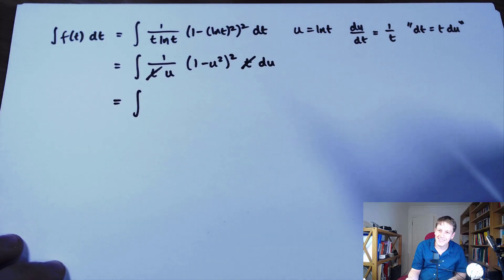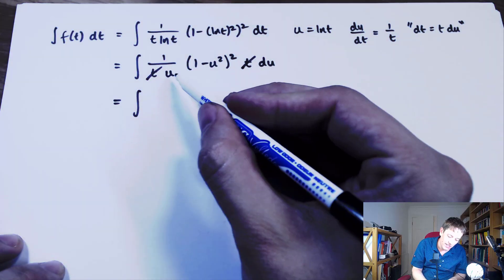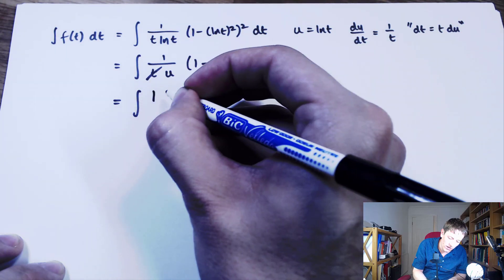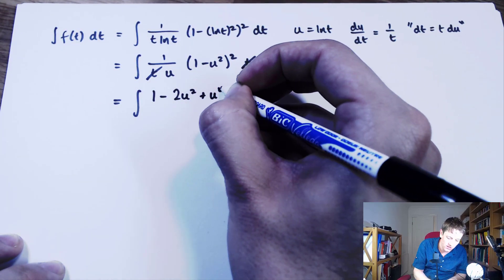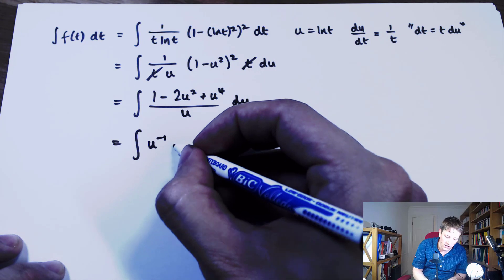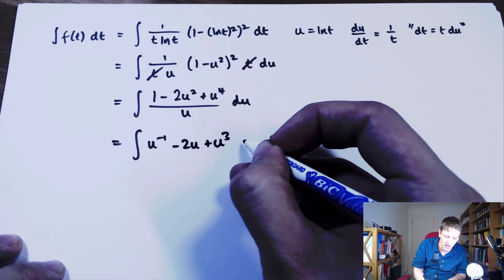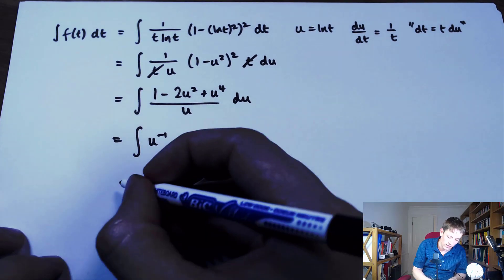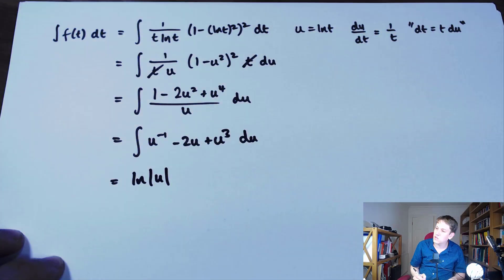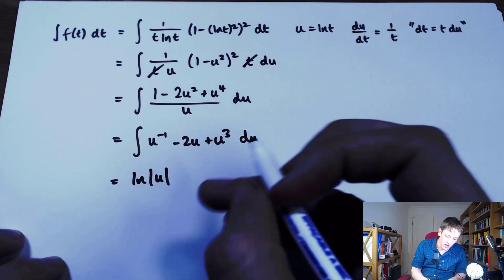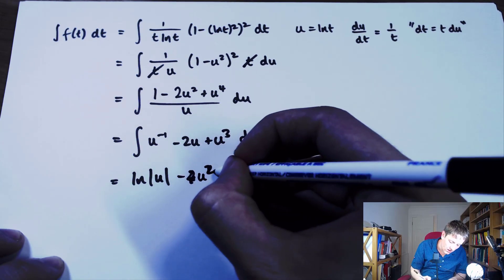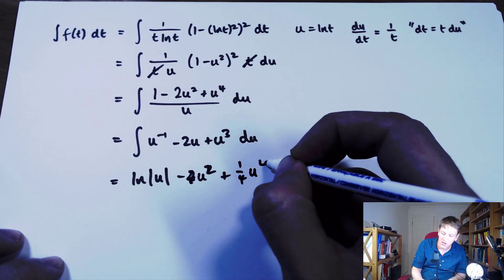Nothing in Step is ever totally straightforward, but this one isn't too bad. If you expand (1 − u²)², you get 1 − 2u² + u⁴, all divided by u. So the integrand becomes u⁻¹ − 2u + u³. This is an integral we can just do: the integral of 1/u is log|u|, then minus 2u²/2 = −u², and then + (1/4)u⁴.